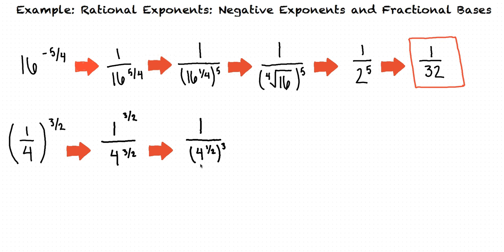Since raising 4 to the power of 1 half is the same as taking the square root of 4, we can rewrite this as 1 over the square root of 4 cubed.